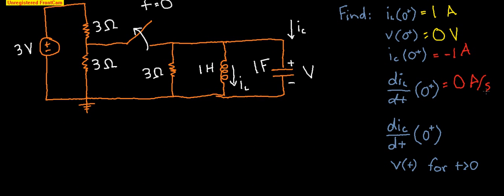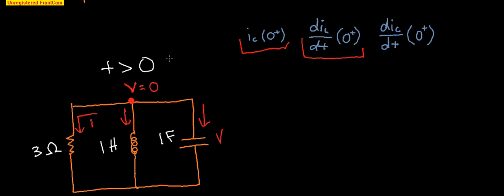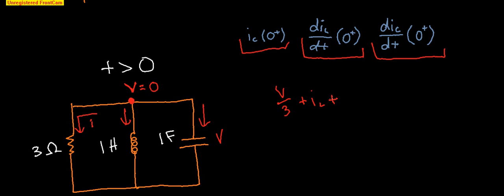Now we need to find dI_C/dt, and this problem is a perfect example of why you need to do lots of practice problems before the exam. They use a clever trick here — so make sure you're doing sample problems at home and not just saying you understand the concepts. To find this, let's take the equation we had: V/3 plus I_L plus I_C equals zero, and take the derivative of both sides. That gives us (1/3)·dV/dt plus dI_L/dt plus dI_C/dt equals zero. We already solved for dI_L/dt — it was zero — so that term goes away.